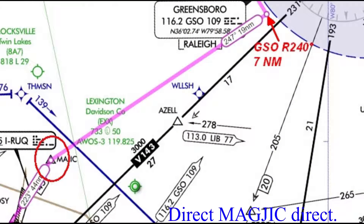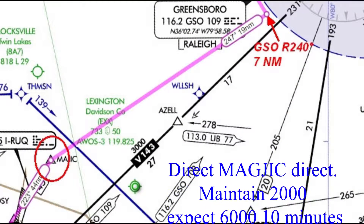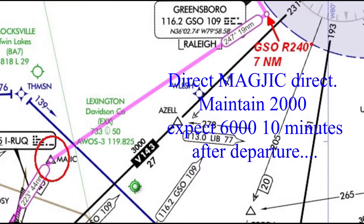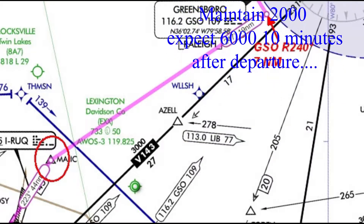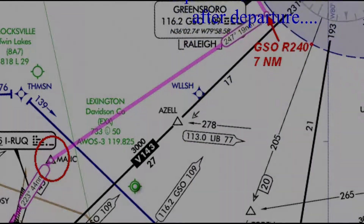Clear to the Charlotte airport via direct to the Greensboro 240 degree radial, seven mile fix. Direct Magic, direct. Maintain 2,000. Expect 6,000 ten minutes after departure.